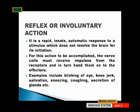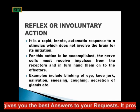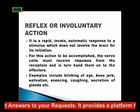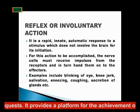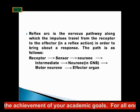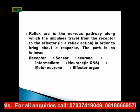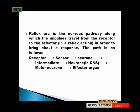For reflex actions to be accomplished, the nerve cells must receive impulses from the receptors and in turn hand them on to the effectors. Examples of reflex or involuntary action include the blinking of the eye, the knee-jerk reflex, salivation while sleeping, sneezing, coughing, and secretion of glands. A reflex arc is the nervous pathway along which impulses travel from the receptor to the effector in a reflex action in order to bring about a response.